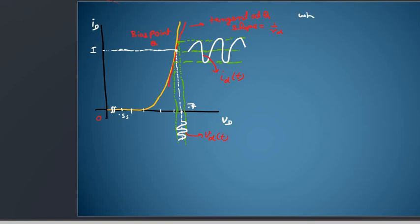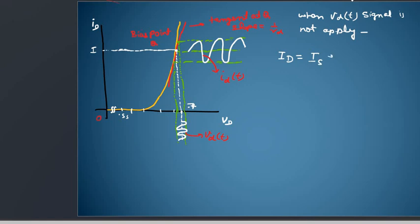When the AC passing signal is not applied and only DC voltage is applied, then the DC current is given by I = Is * e to the power (Vd / η·Vt).